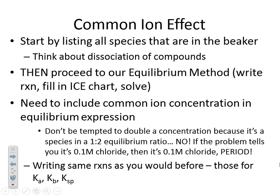How do you do a common ion effect problem? You do it exactly the same way you do any other equilibrium problem — you just have to think about it slightly before getting started. First, think about all the species that are in the beaker. What are all the chemical compounds we have? Think about the dissociation of those compounds. Ammonium chloride is not ammonium chloride in solution — it's ammonium ion and chloride ion, completely separate. Think about how compounds are going to dissociate in water, and make a list of what you have in solution.